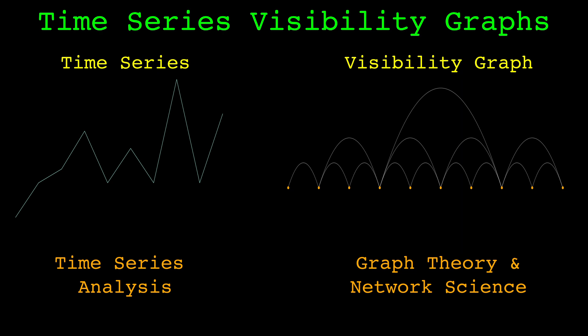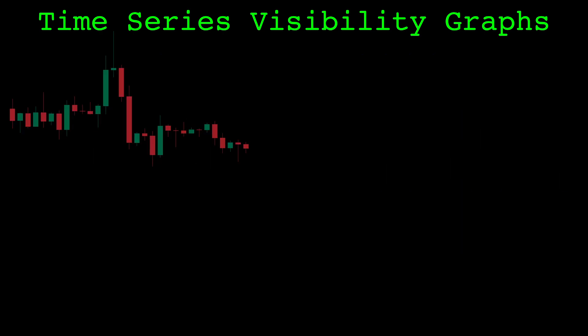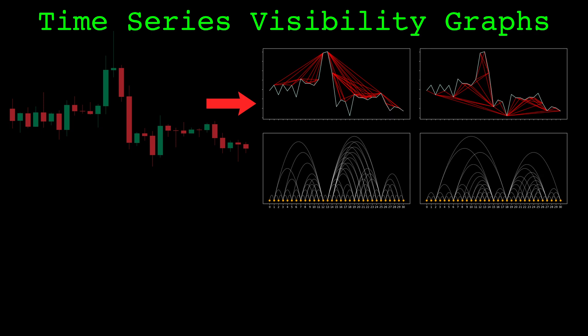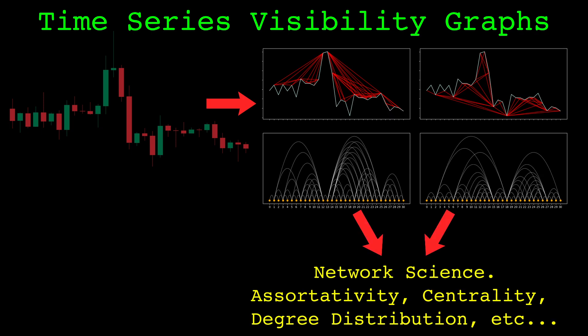The visibility graph gives us a way to convert a time series into a graph. This gives us a bridge between time series analysis and graph theory. For a trading application, we often consider the price data. We can convert the price to a visibility graph, then analyze the resulting graph with the many tools from network science to gain insights about the price behavior.